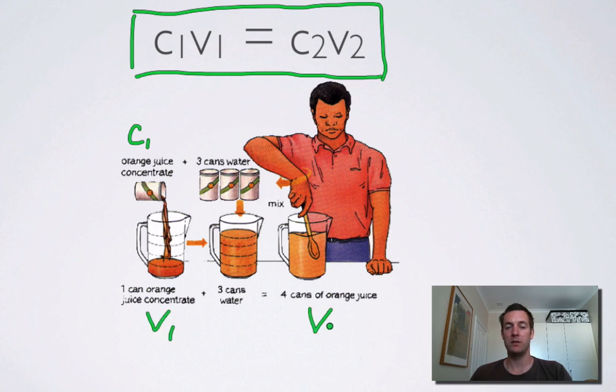How much do we end up with? That's V2. This four cans is how much we end up with. So V2 is the final volume, V1 is the initial volume, and this solution here will have a different concentration to the original one because we've diluted it, and that's going to be C2, that's our new concentration.